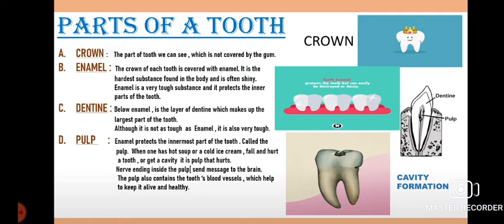The crown is the outermost visible part. Below the crown is the enamel, which gives the white shiny appearance and is the hardest part. Below the enamel is the dentine, which is not as hard as enamel but is also tough. The innermost part is the pulp, which allows cavity formation, contains nerve endings that send signals to the brain, and also contains blood vessels.